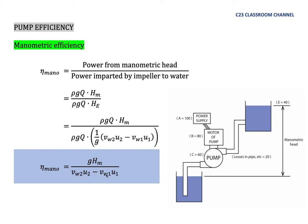This diagram shows a pump drawing liquid and transferring it to a higher-level tank, driven by a pump motor connected to a power supply. For example, suppose we supply 100 units of energy from the power supply to the pump motor. Due to wiring losses, some energy is lost, and only 80 units are available to rotate the motor.